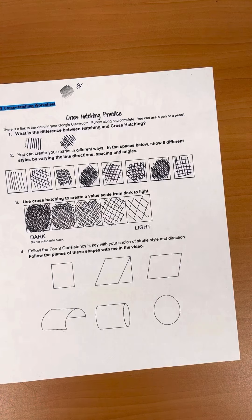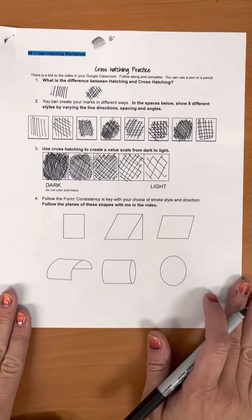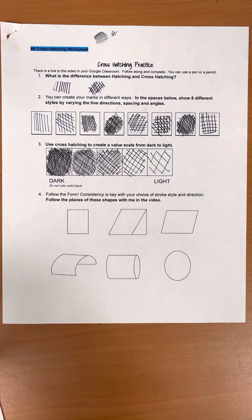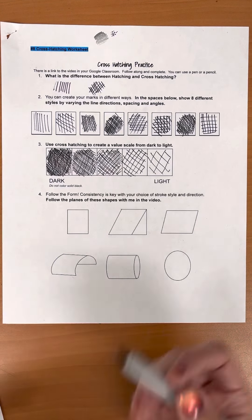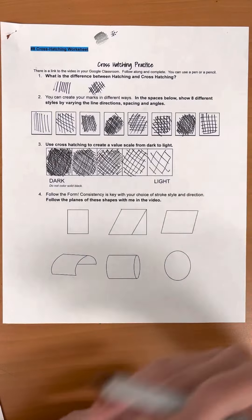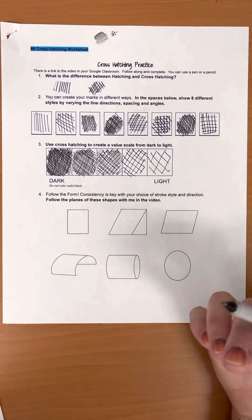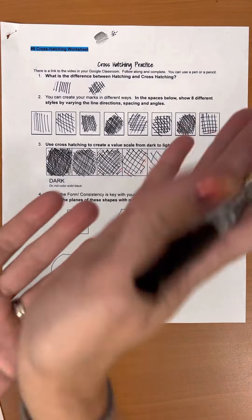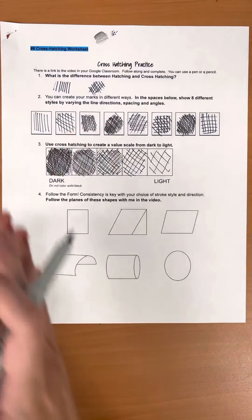Now when we shade, we're trying to create form. Form is the appearance of three-dimensional in your work. So consistency with your stroke choice and direction is what you want to work on, and follow the form. You're always thinking, is this a curved object? If it has a curve to it, you want to curve your lines.